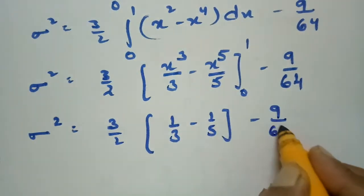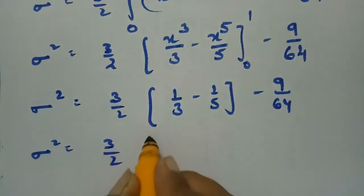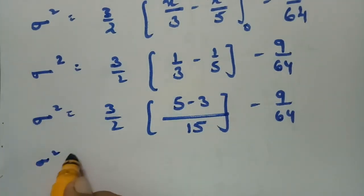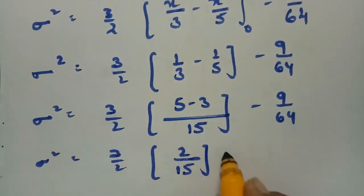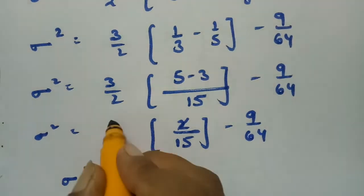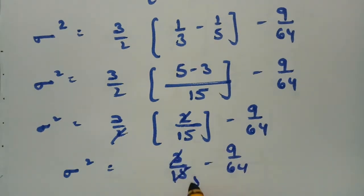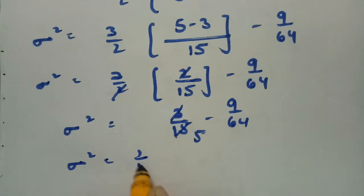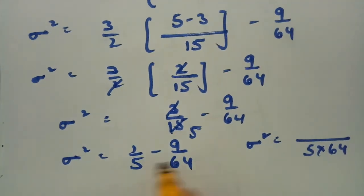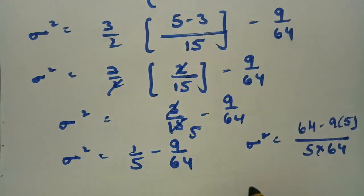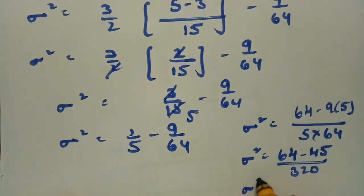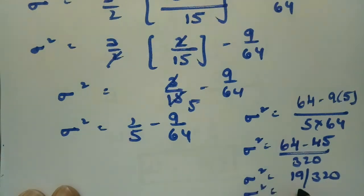Substituting the limits: σ² equals 3/2 times (1/3 minus 1/5) minus 9/64. Taking 15 as LCM gives 3/2 times (5 minus 3)/15 equals 3/2 times 2/15, which simplifies to 1/5. Therefore σ² equals 1/5 minus 9/64. Taking LCM as 320 gives (64 minus 45)/320 equals 19/320, approximately 0.06.